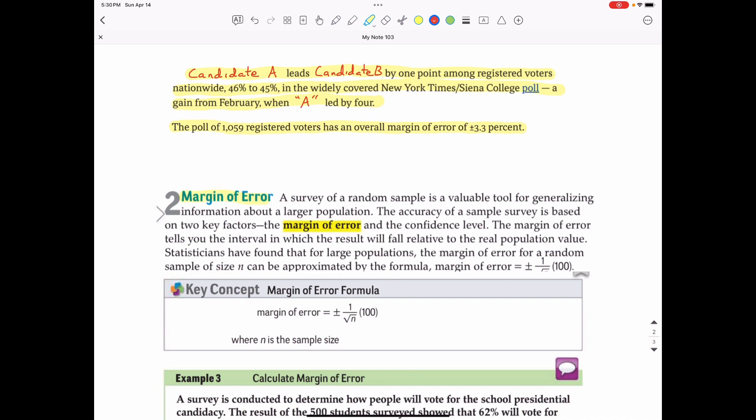Margin of error is the accuracy of a sample survey based on two key factors: margin of error and the confidence level. The margin of error tells you the interval in which the result will fall relative to the real population value. Statisticians have found that for large populations, the margin of error for a random sample size n can be approximated by the formula margin of error equals plus or minus 1 over the square root of n times 100, which changes the decimal to a percent where n is the sample size.